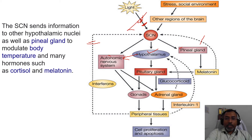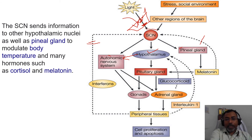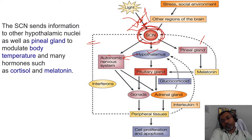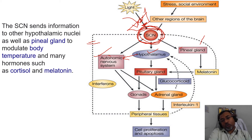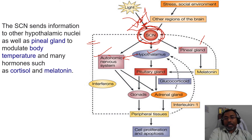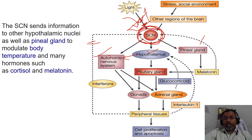Whenever the suprachiasmatic nucleus receives the light signal from the retina through the retinohypothalamic tract, it behaves like a gateway for managing the autonomic nervous system, which acts through the various hypothalamic nuclei. Then the hypothalamus controls the pituitary, and also regulates the pineal gland, which regulates melatonin.